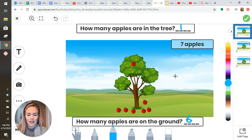That shows us there are seven apples altogether in the picture, divided up as one and six, which still equals seven.